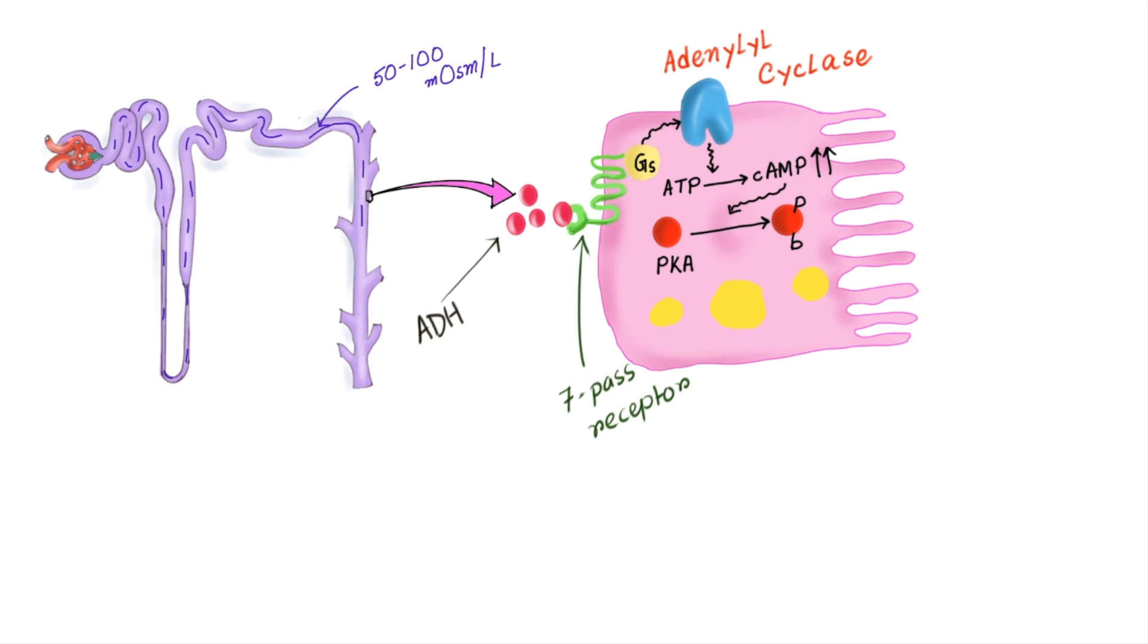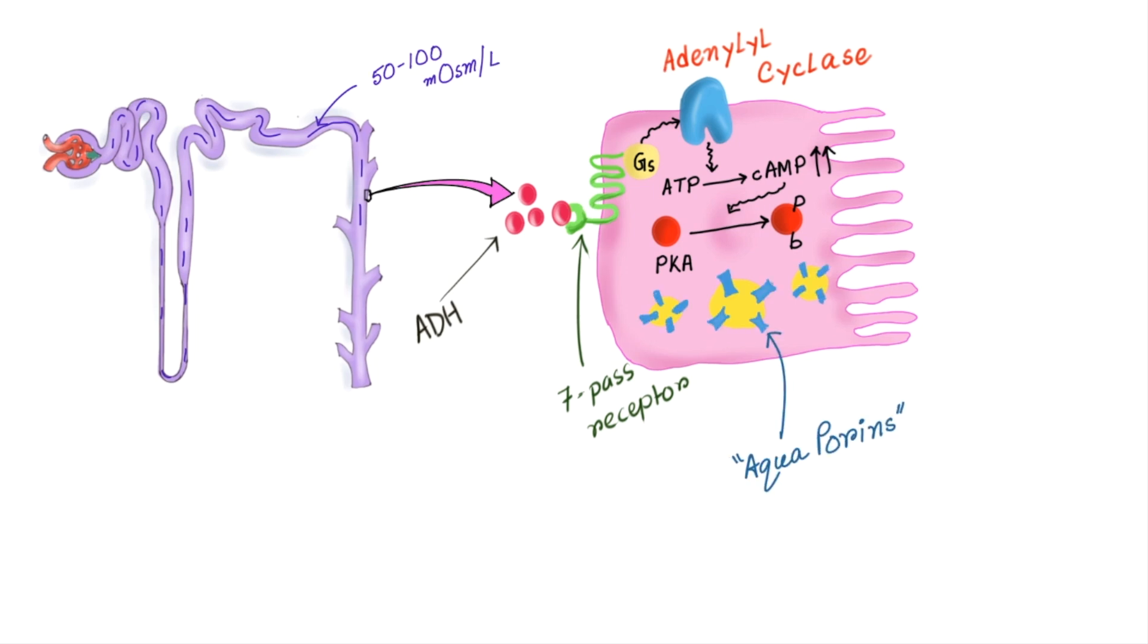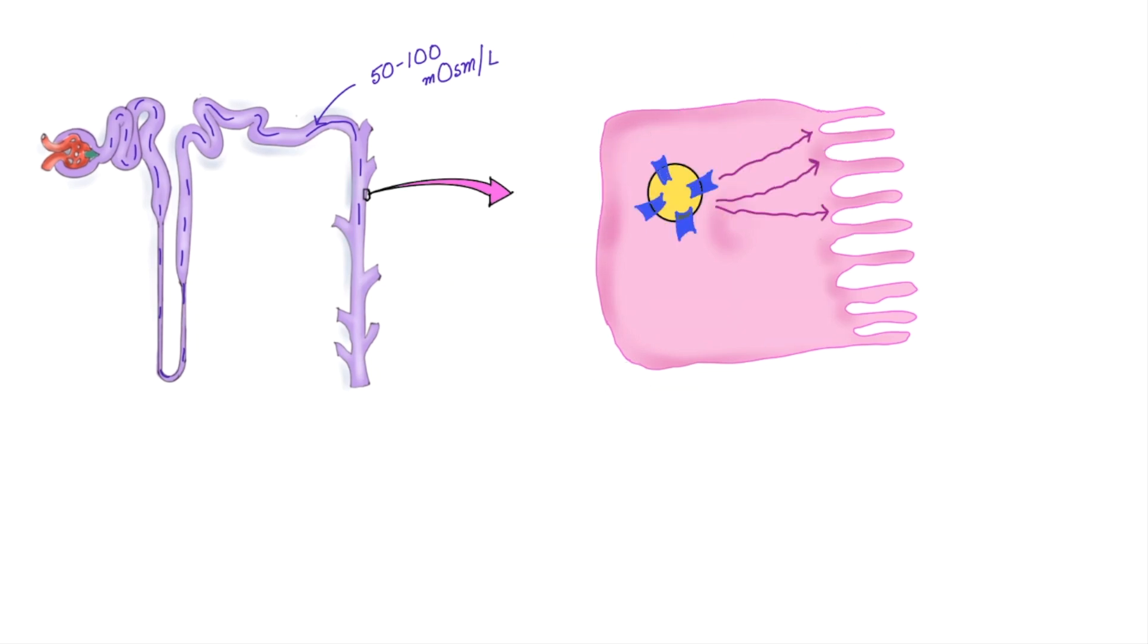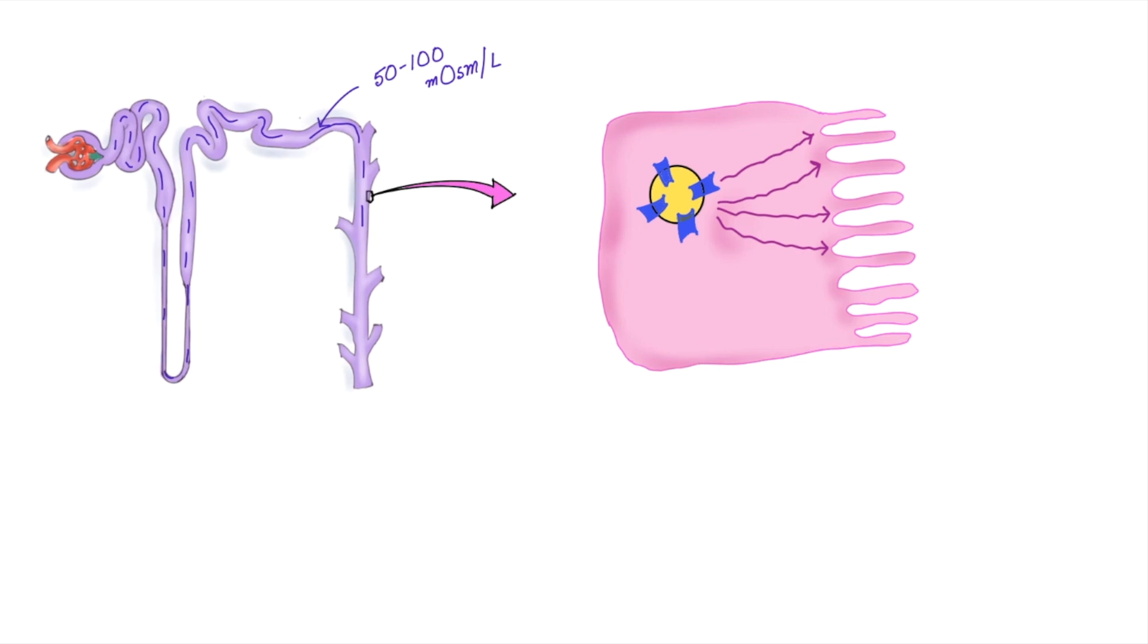Now you can see there are some intracellular vesicles. Those vesicles are having some special protein channels which look like pores and water can pass through it. That's why those protein channels are called aquaporins. Now protein kinase A phosphorylates those proteins and they get fused with the luminal membrane of the nephron.